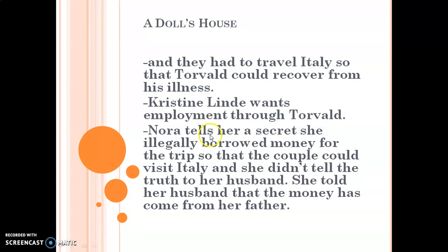Nora tells Kristine Linde that she illegally borrowed money for the trip to Italy. She didn't tell the truth to her husband and instead told him that the money had come from her father.